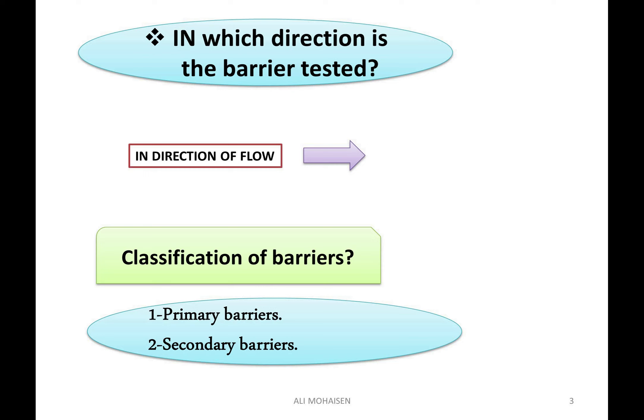وعندنا النوع الثالث — Tertiary Barrier: هنا إذا فشل خط الدفاع الثاني عندي خط دفاع ثالث. أمثلة على ذلك: Underground Blowout، أو Excessive Casing Pressure، أو Severe Loss Circulation اللي ممكن أن تقود إلى ترك البئر جزئياً أو كلياً. حسب الظرف والحالة، ممكن يكون الحل هو Barite Plugs أو Cement Plugs.